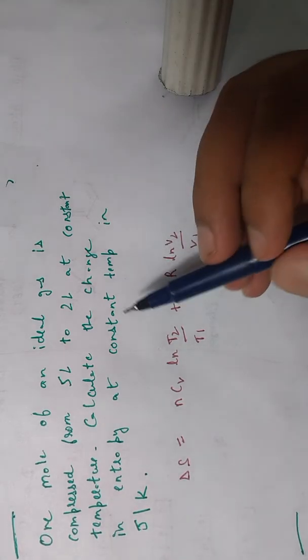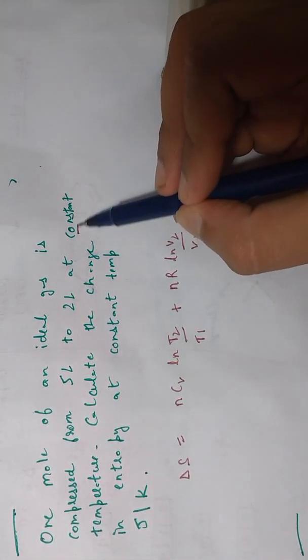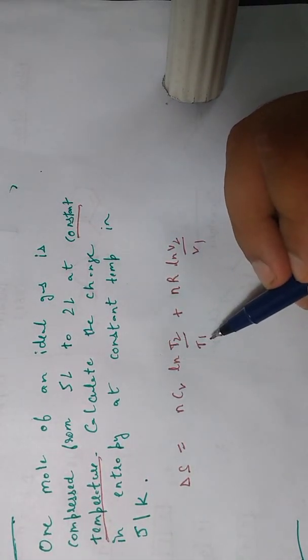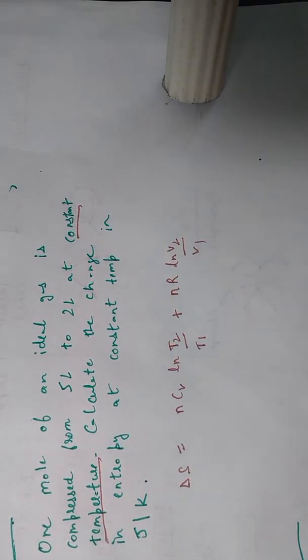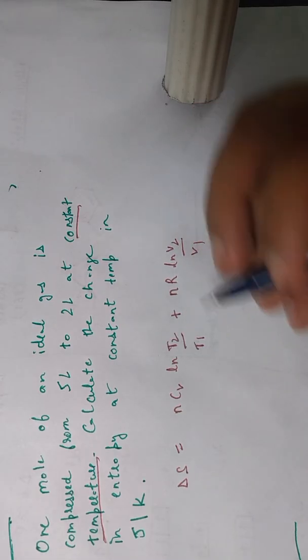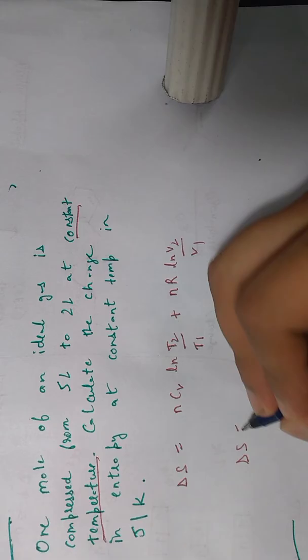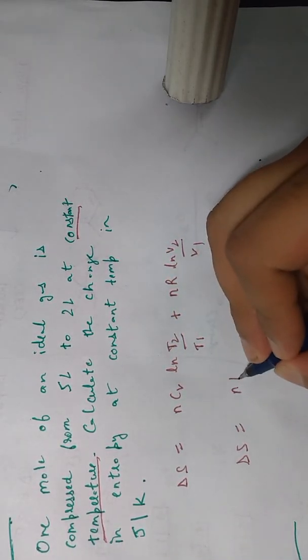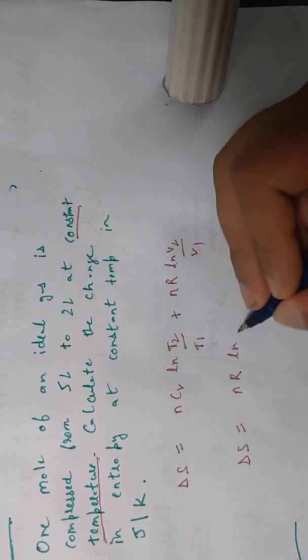The question says at constant temperature, so T2 and T1 are equal. This equals ln(1), and ln(1) is zero. So we are left with only this term: Delta S equals n R ln(V2/V1) because the first term is zero.